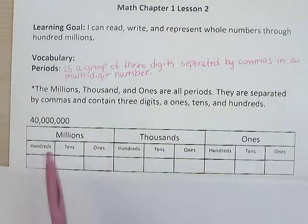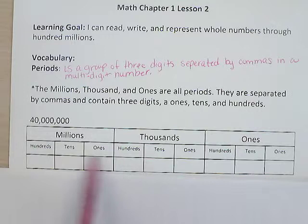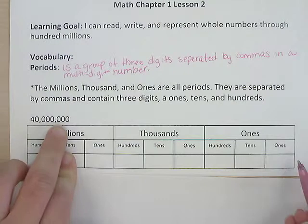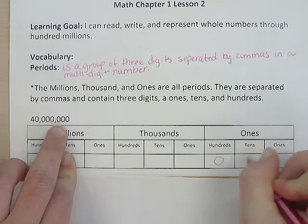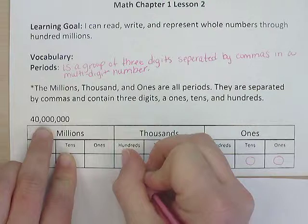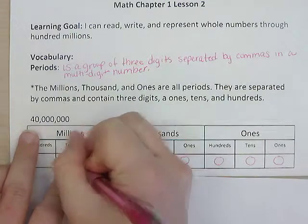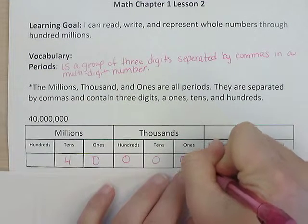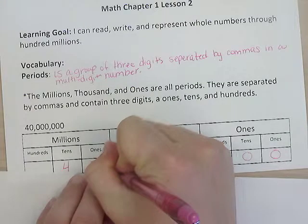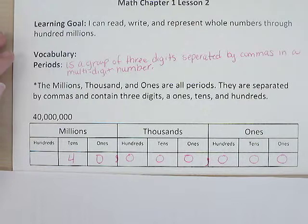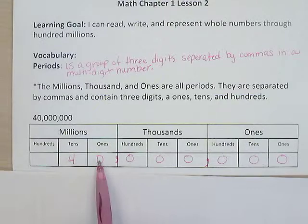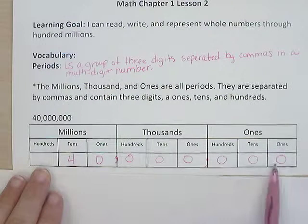So I'm going to practice, we're going to practice placing this number into our periods chart. So do you see how the number is separated by threes? Okay, so our ones, I want you to do this as I'm doing this, has three zeros. The thousands period of this number has three zeros. And then the millions has a four and a zero. And so you would see those commas right here separating those periods. So the way that we would read this number would be forty million. All right?